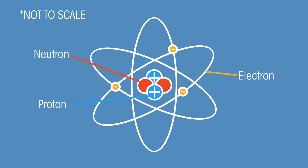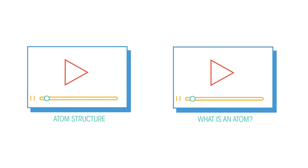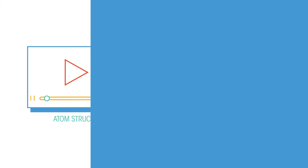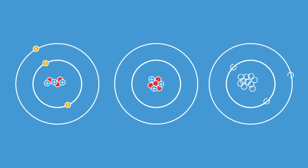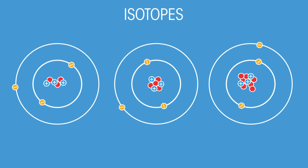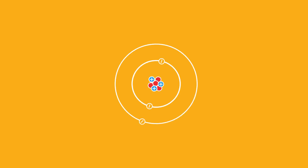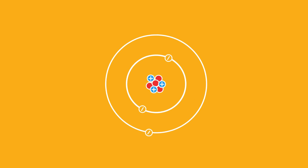You've looked at atoms from a chemistry point of view, but we also cover them in physics too. You should already know all about the structure of atoms. In this video, we're going to look at different forms of an atom called isotopes. Before we start, let's quickly recap the general structure of an atom.